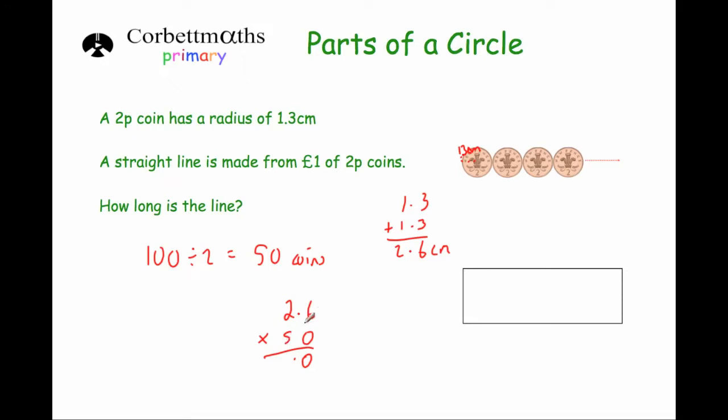5 times 6 is 30. Put the zero down, carry the 3. 5 times 2 is 10, plus 3 is 13. So it's 130.0 centimeters, or just 130 centimeters. And that's it.